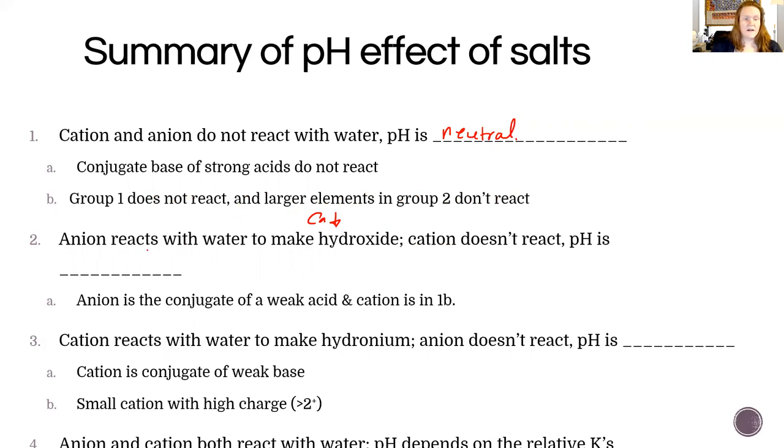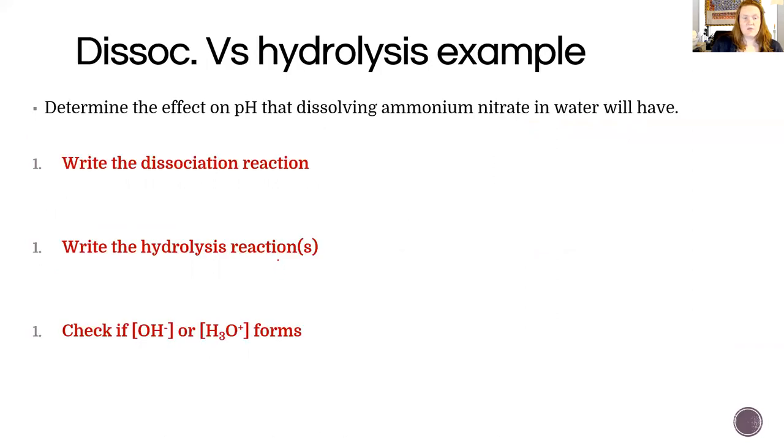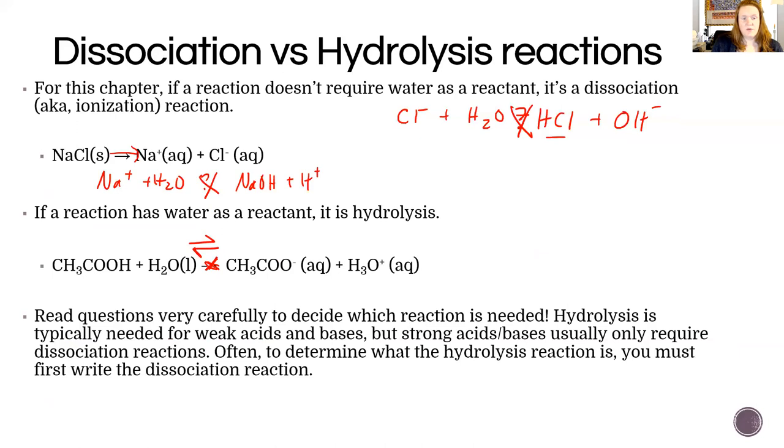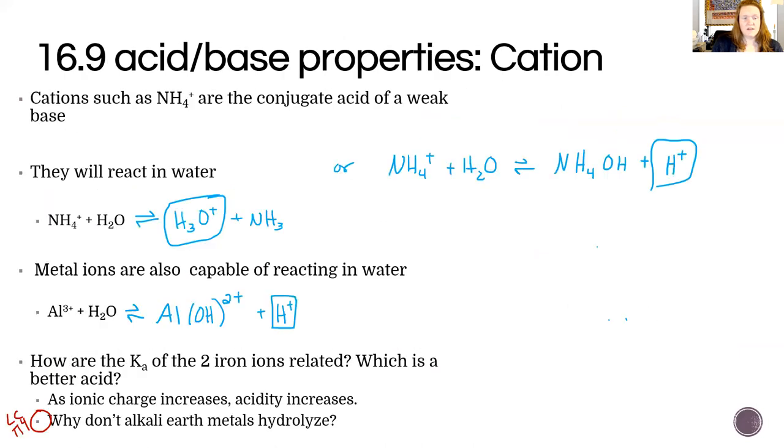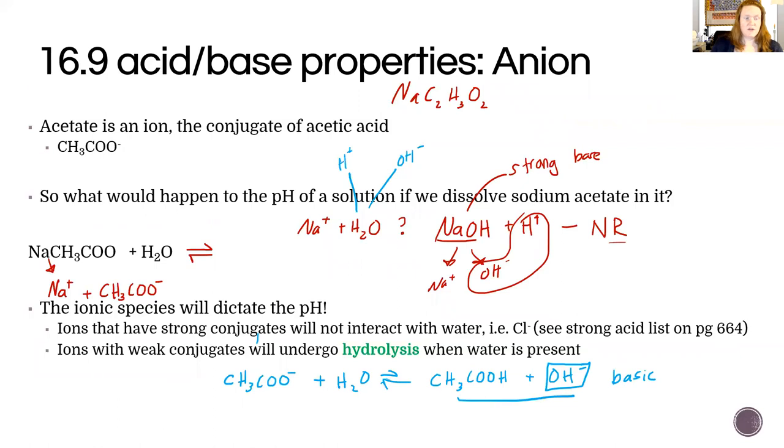If we have an anion that reacts with water, it'll make hydroxide because it steals the H+, but the cation doesn't react. That would mean that we're basic. That example was when we looked at what acetate does - the anion makes a weak acid and forms hydroxide as well, so that's basic.